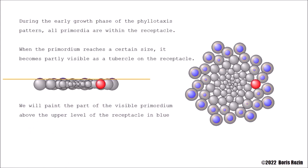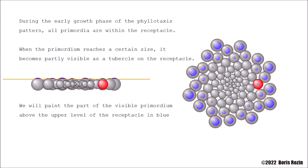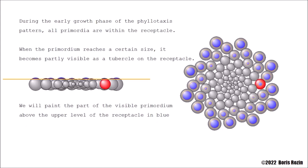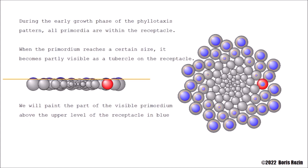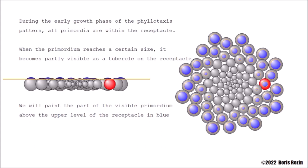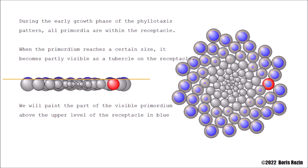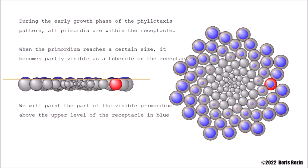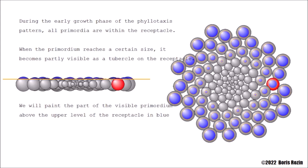During the early growth phase of the phyllotaxis pattern, all primordia are within the receptacle. When the primordium reaches a certain size, it becomes partly visible as a tubercle on the receptacle. We will paint the part of the visible primordium above the upper level of the receptacle in blue.